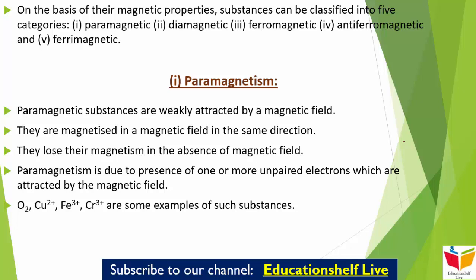पहला है paramagnetism। जो paramagnetic substances होते हैं वो magnetic field द्वारा बहुत ही weakly attracted रहते हैं। They are magnetized in a magnetic field in the same direction, और अगर magnetic field नहीं रहेगी तो वो अपना magnetism lose कर देंगे। Paramagnetism किसकी वजह से होता है? एक या एक से ज़्यादा unpaired electrons present हों तो paramagnetism की property show होती है — क्योंकि unpaired electrons magnetic field द्वारा attracted रहते हैं। Examples: dioxygen, Cu²⁺, Fe³⁺, Cr³⁺।